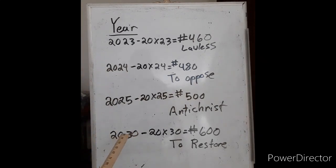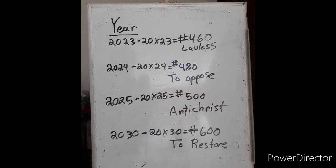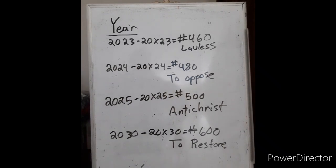What about 2030? 20 times 30 is the number 600. 600 in the Strong's concordance is to restore back. That's the times of restitution in Acts chapter 3, the appearing of Jesus Christ. And then if you add 20 plus 30, it's 50, which is a jubilee. The end of the 120 jubilees spoken about in Genesis chapter 6, verse 3.